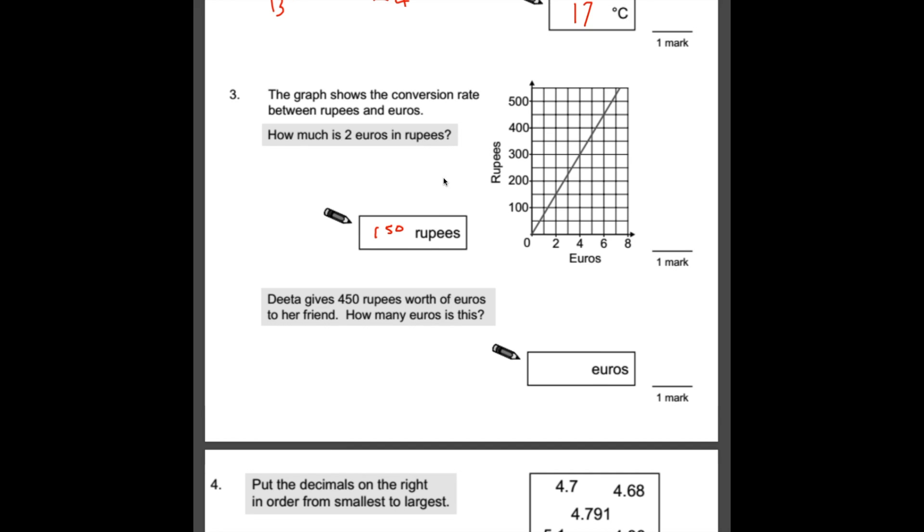Dita gives 450 rupees worth of euros to her friend. How many euros is this? So with this one, we just work backwards. We go to rupees first, find 450, work our way across, stop at that point. You can see it's exactly 6 euros.